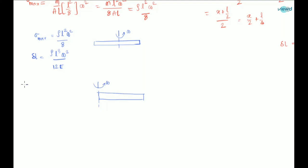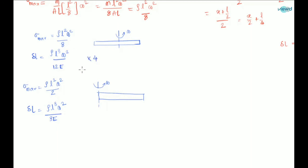For the second case, when rotation is about one end, σ_max = ρl²ω²/2 and δl = ρl³ω²/(3E). To remember this, just multiply the center-of-gravity-axis formulas by 4 to get the one-end-fixed case.